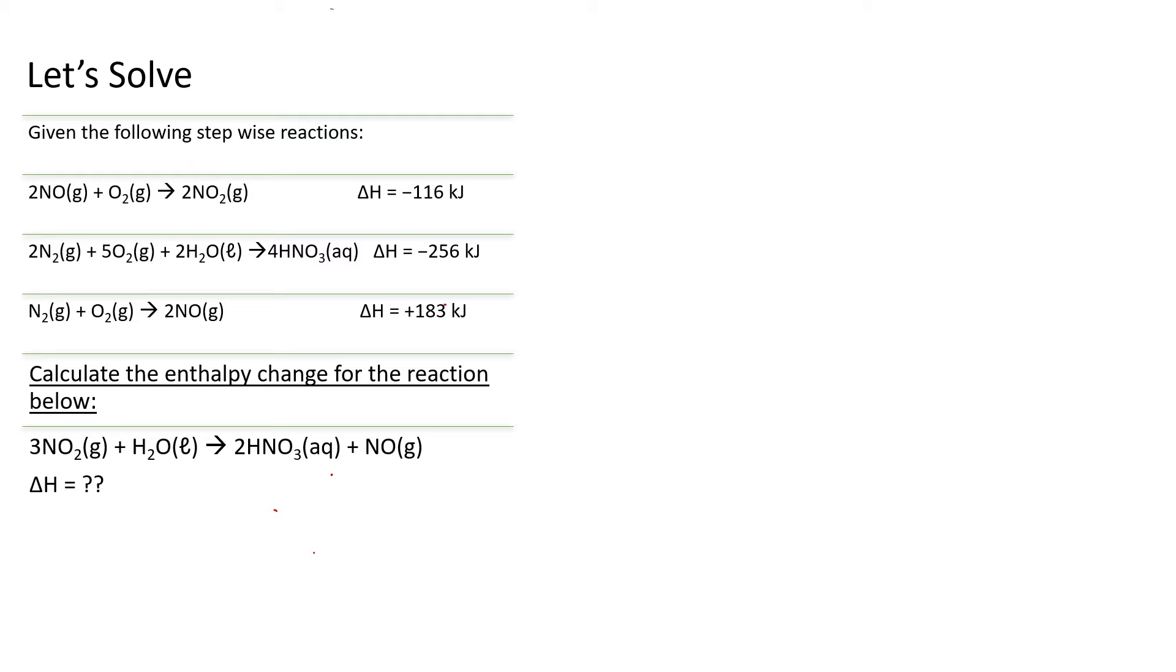We're going to do a couple things to address this situation. We're going to both flip reaction one, and we're going to multiply it by three halves. Why multiply by three halves? Well, if we multiply 2 NO2 by three halves, we get 3 NO2. So that's going to be our first step.